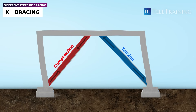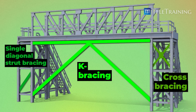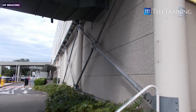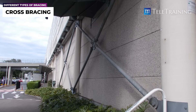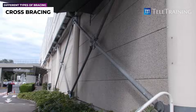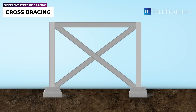A K-brace works by transferring the lateral load caused by the earthquake downwards into the columns and eventually to the building's foundations. Cross-bracing is more common than K-bracing and is something most people are familiar with. While cross-bracing is different from K-bracing, it works in a similar way. When a load, such as wind, acts against the side of a building, it will cause deflections and sway.